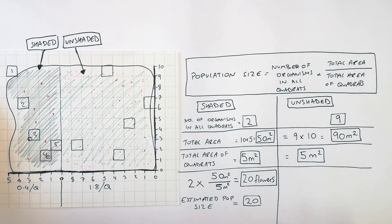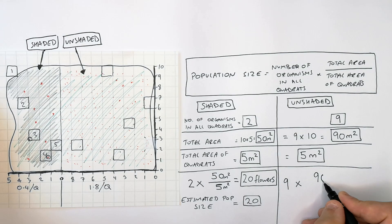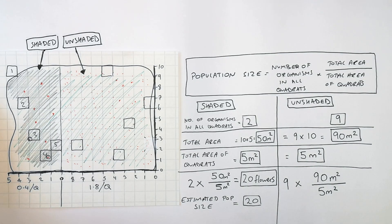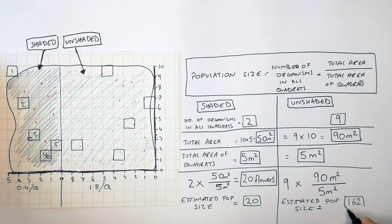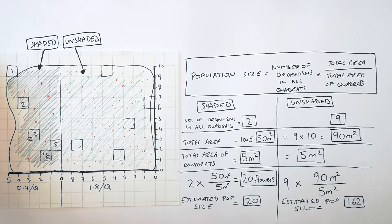Now use the equation: estimated population size equals 9 (total number of organisms in all the quadrats) times by 90 meters squared (the total area), divided by 5 meters squared (the total area of the quadrats). That gives you an estimated population size of 162 plants. Remember, it is only an estimated population size — more reliable results come from using more quadrat coordinates to get a more accurate mean.